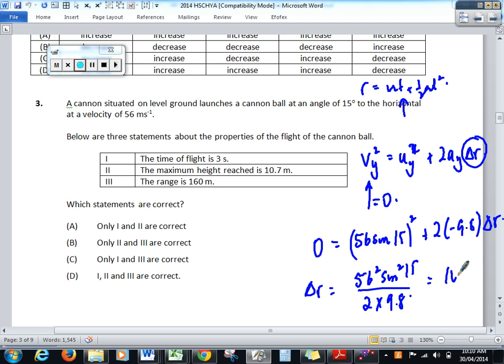So the height, maximum height, would equal 56 squared sine squared 15 over 2 times 9.8. So we just take this value here, square it, and then divide it by 19.6. And what do I get as a value? Ten point seven. It was correct. It was D. So all three are correct.